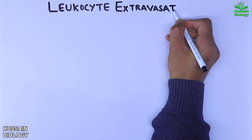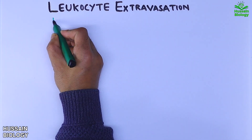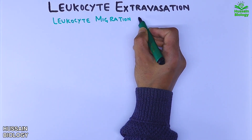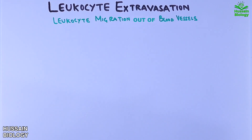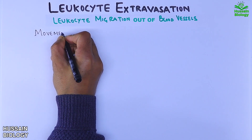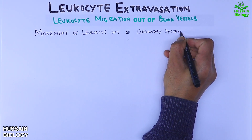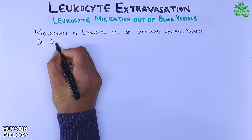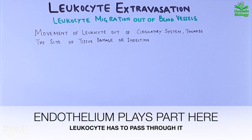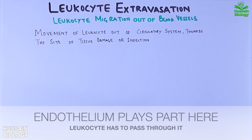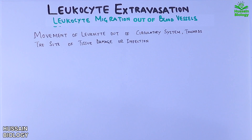In this video we will be discussing leukocyte extravasation, which involves the migration of leukocytes out of blood vessels. In simple terms, it is the movement of leukocytes out of the circulatory system towards the site of tissue damage or infection. Leukocyte extravasation is driven through many different steps which we are going to explain now.